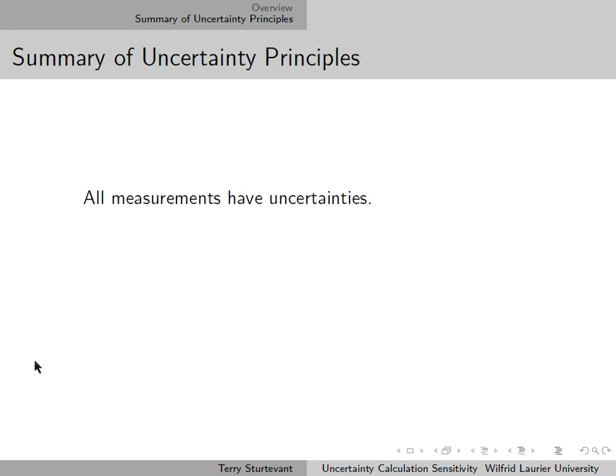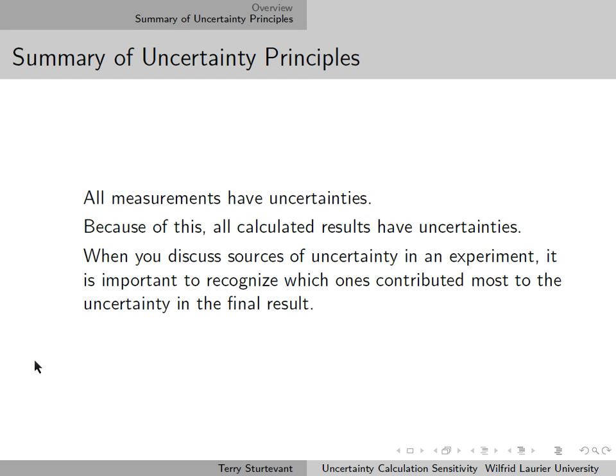All measurements have uncertainties. Because of this, all calculated results have uncertainties. When you discuss the sources of uncertainty in an experiment, it's important to recognize which ones contributed most to the uncertainty in the final result.